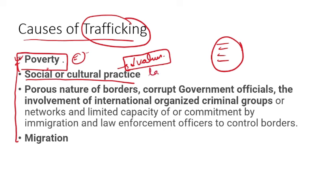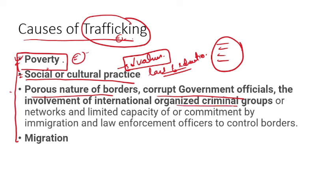Other causes include: the porous nature of borders — for example, the India-Myanmar border has no proper fencing, only stone structures and jungle areas, making it easy to cross; corrupt government officials; and the involvement of international organized criminal groups who work with local gangs.